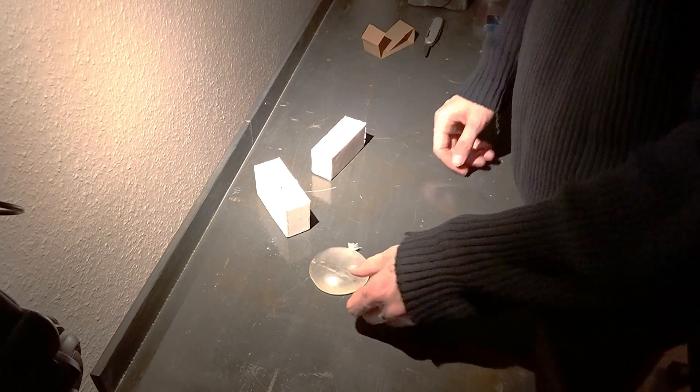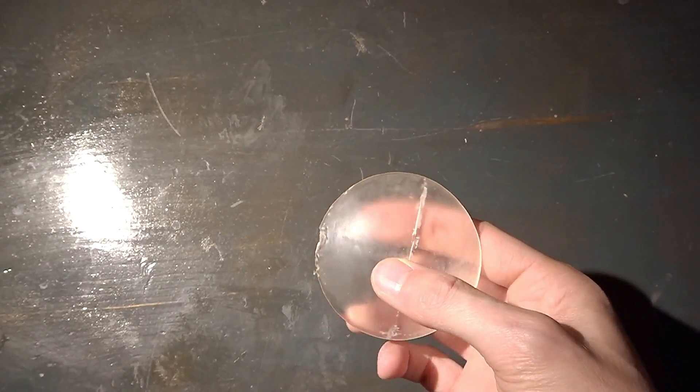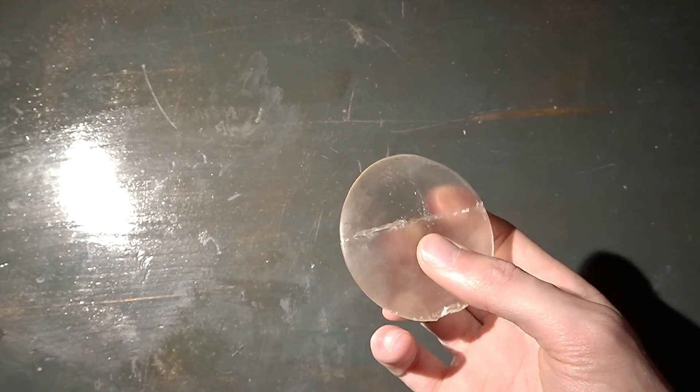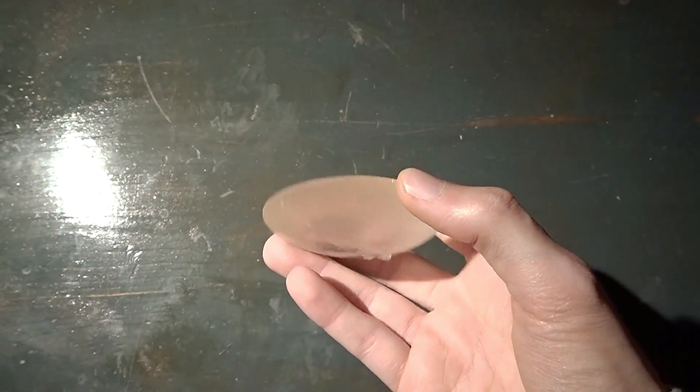After the epoxy hardened and I got everything out of the mold, I cut off the handle and we're done. Nah, not really, the surface looks still rubbish so we have to do something there.